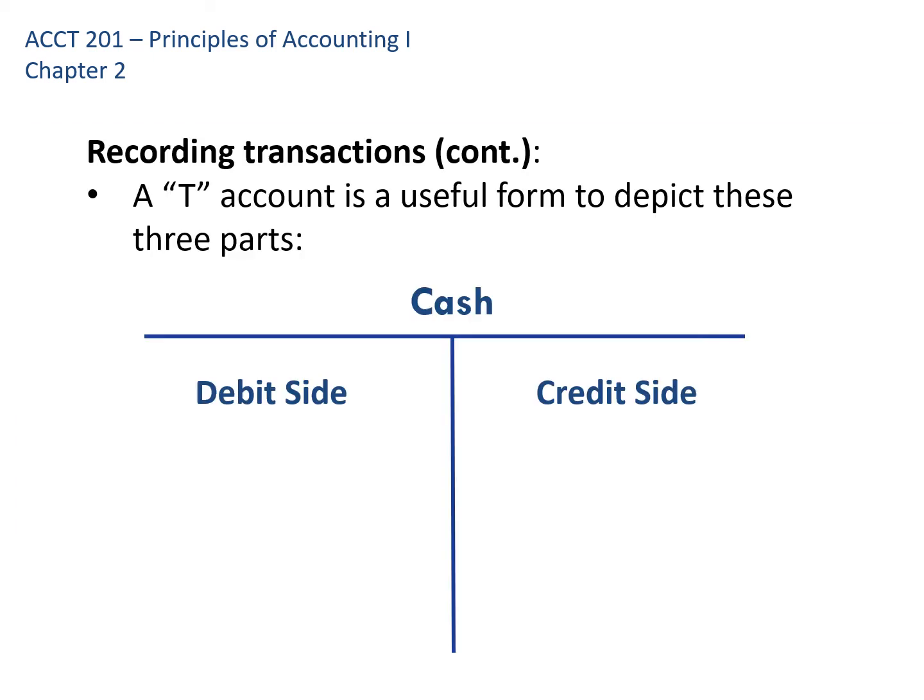One thing that's very important in accounting for visualizing how transactions work are T-accounts — they get the name because they look like a T. There are three parts to every T-account: the title across the top, the debit side which is the left side, and the credit side which is the right side. Debit on the left and credit on the right is the same regardless of what account we're using — that's a universal rule.